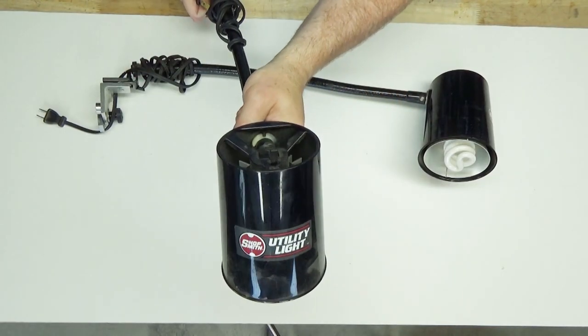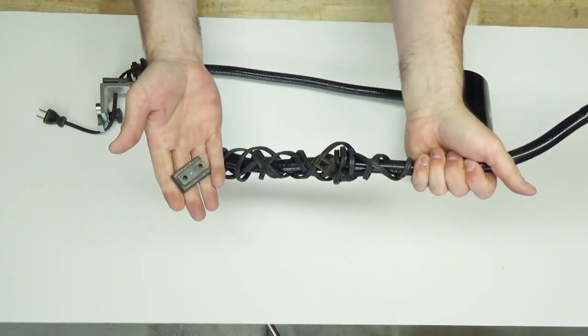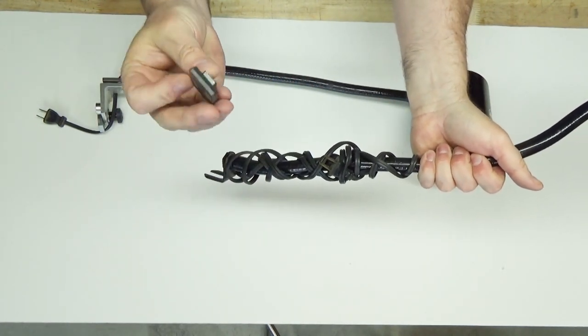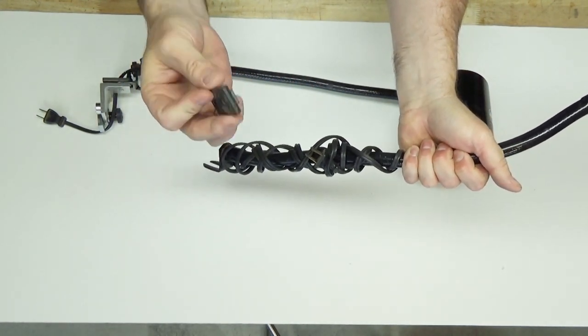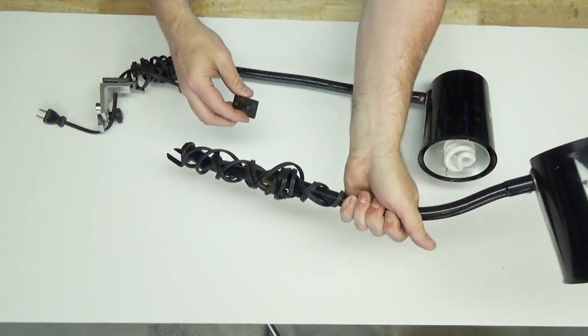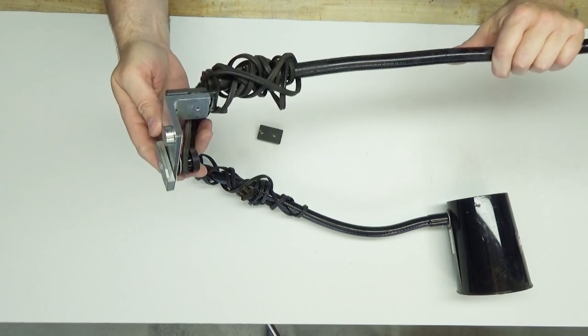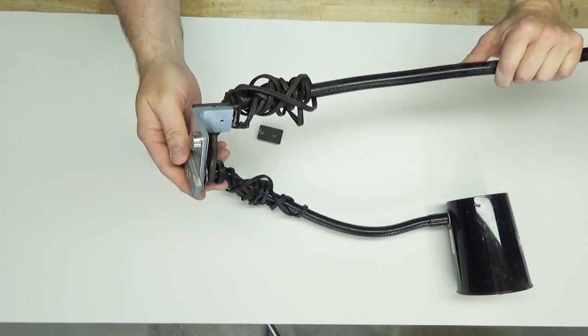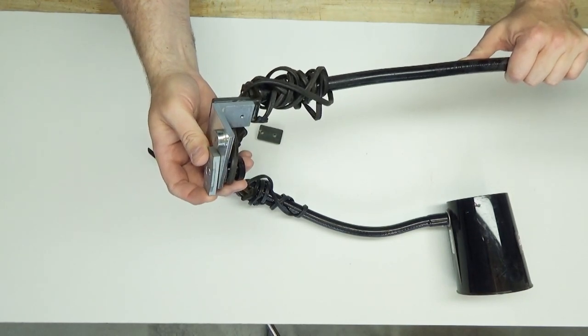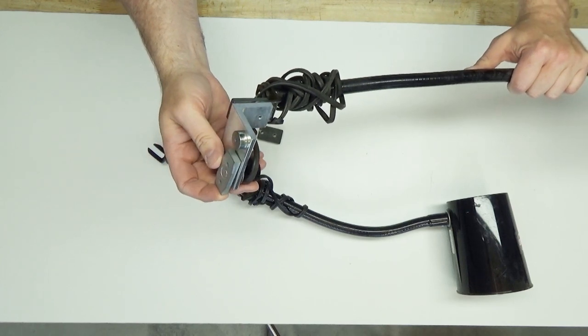Extra light is always handy. I have two versions of the ShopSmith utility light. One that mounts with this bracket onto any of the tools. For example I could screw this to the back of the headstock and one that is really the same except it also comes with this extra bracket for mounting in any of the slots on the fences or in the miter slot.